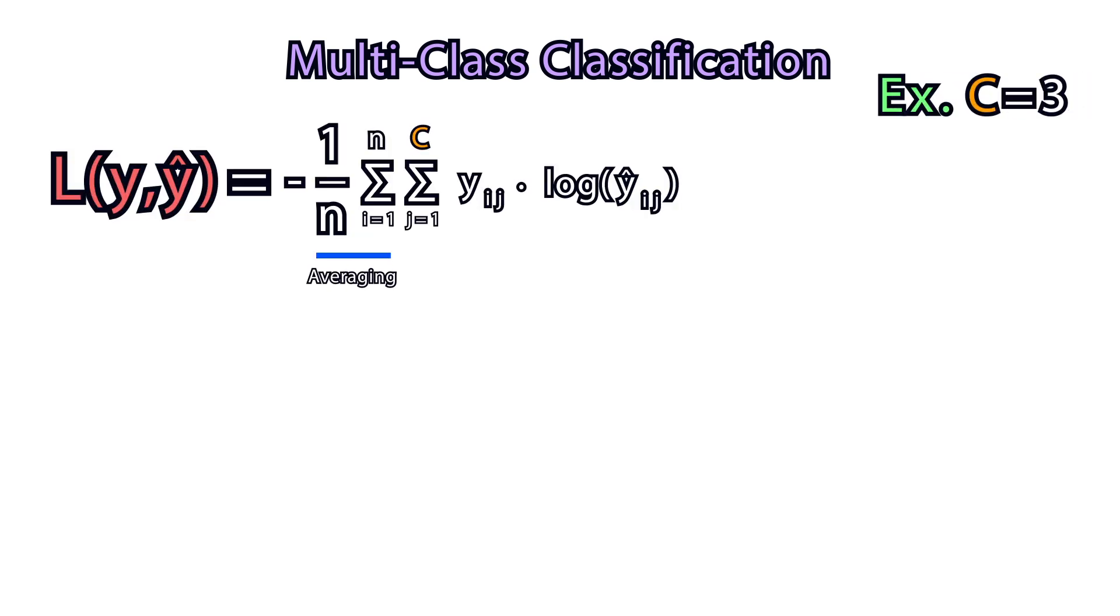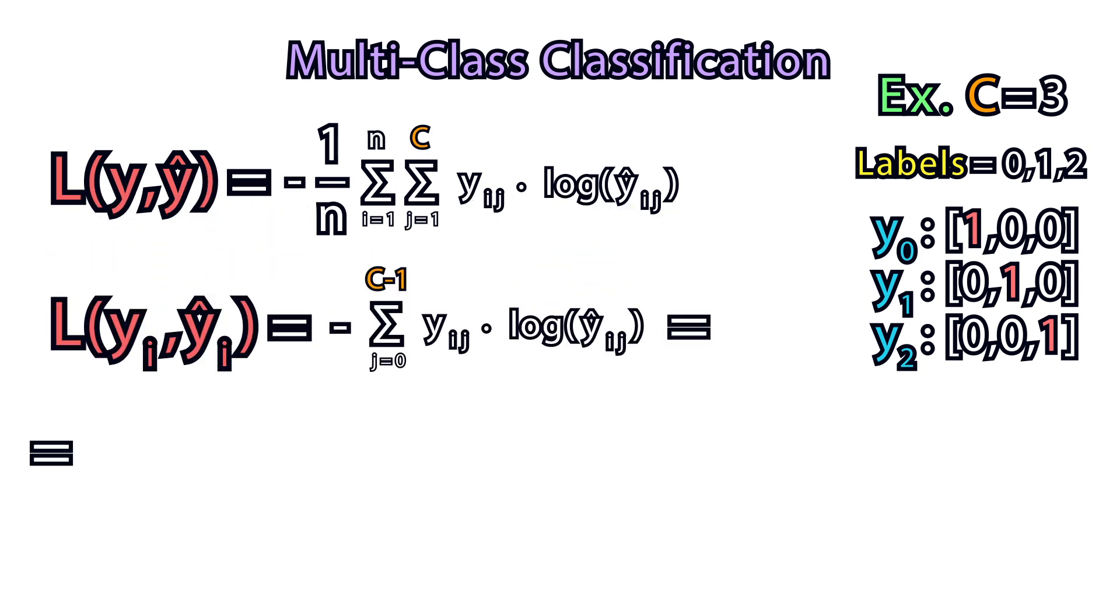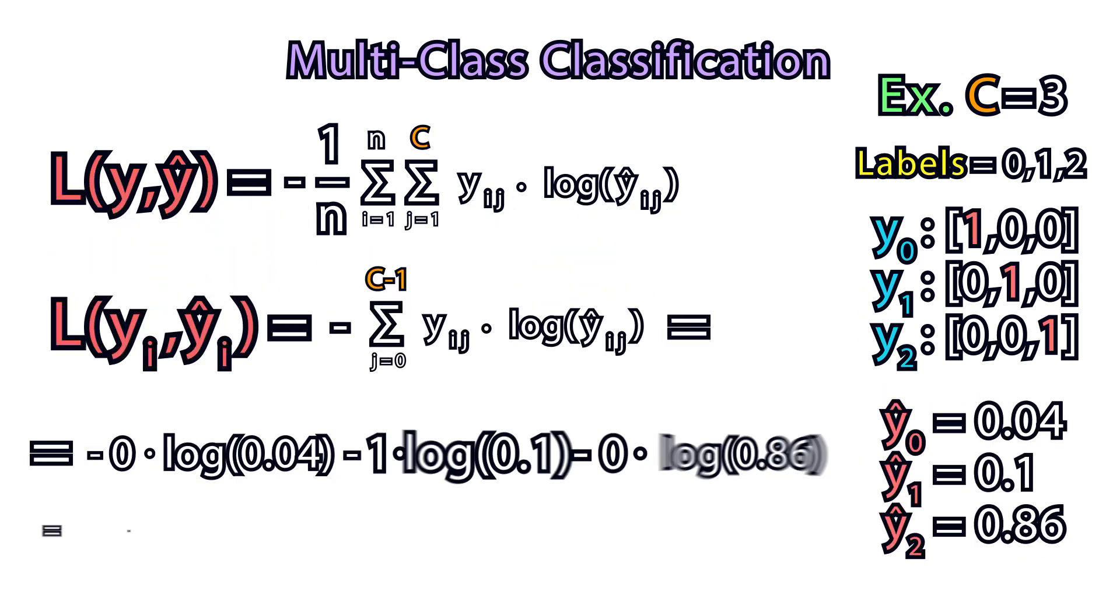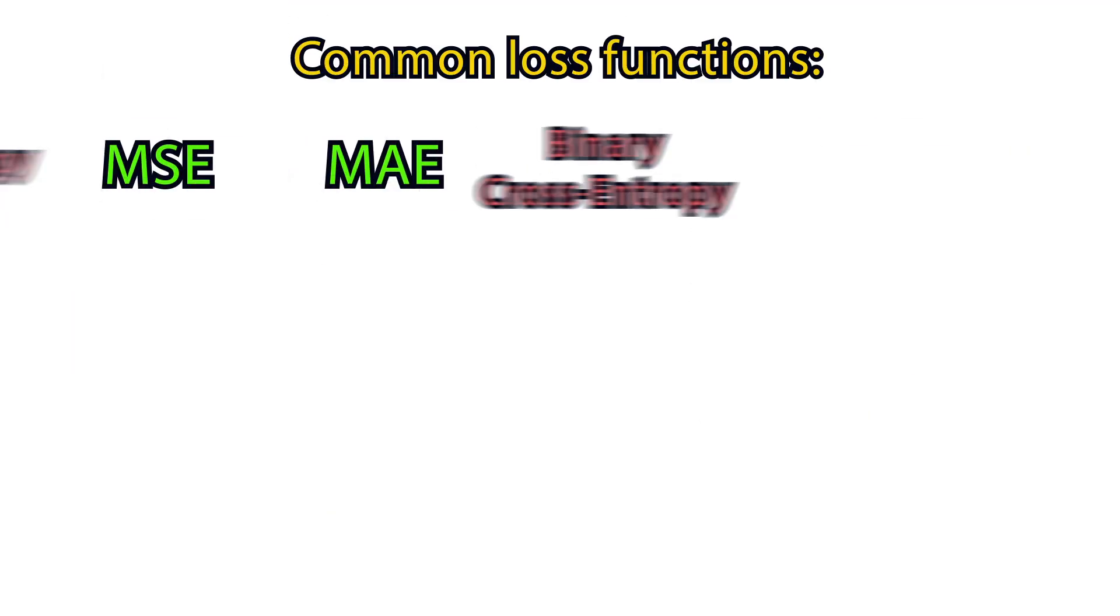For multi-class classification, when there are C classes, the loss becomes this. Say you have three labels, 0, 1, 2, that are one-hot encoded. We have to predict 1, but predicted 2 with the following probabilities. Then, here is the error. The above-mentioned loss functions are the most common ones, however.